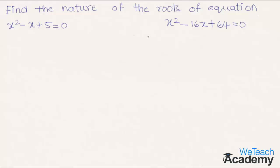We also have the second equation x squared minus 16x plus 64 equal to 0. By comparing the first equation with ax squared plus bx plus c equal to 0, we get the value of a as 1, b equal to minus 1, and c equal to 5.